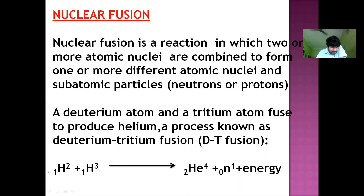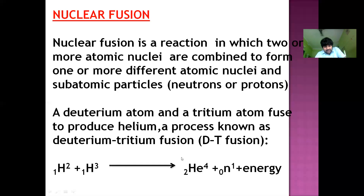Just see an example — we are combining deuterium and tritium. This deuterium molecule and this tritium molecule combine to produce a helium molecule, and one neutron is emitted along with a huge amount of energy.